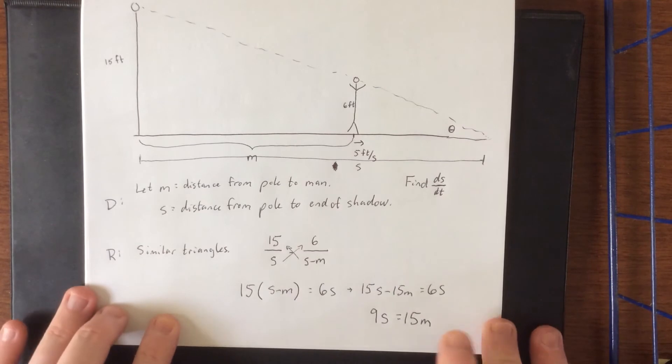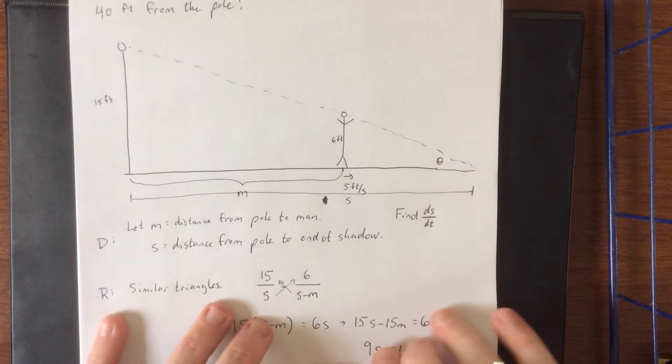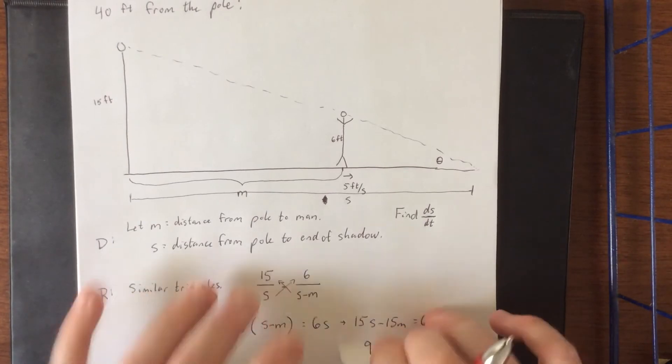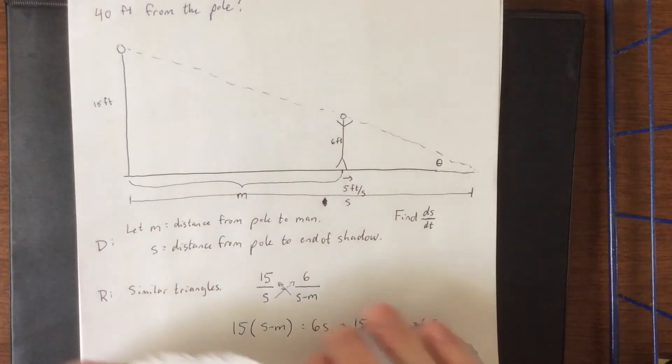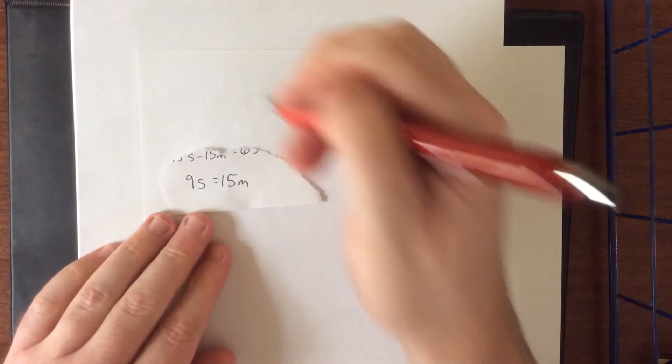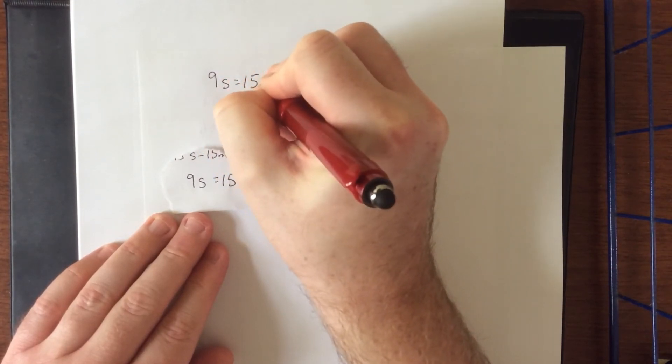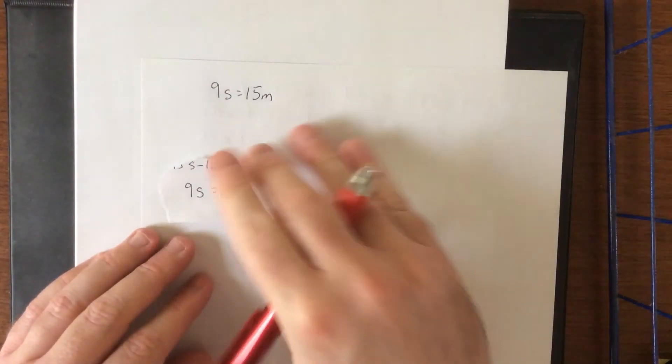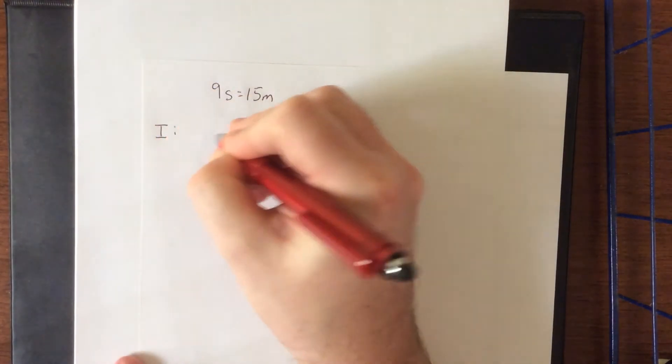Now, I'm about out of space here, so I'm going to take this relationship and... You know what? This seems horribly irresponsible, but I'm going for it anyway. Oh yeah, can never reuse this. Just to remind us of where this came from. So 9S is equal to 15M. At this point, we are ready to move on to the I step of DRIPS, which is to implicitly differentiate with respect to time.